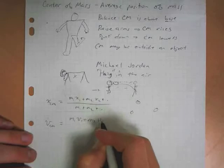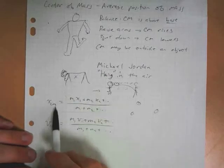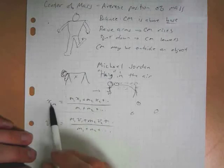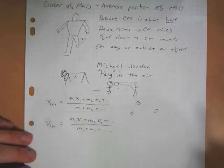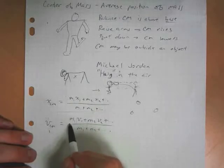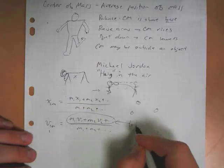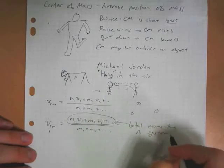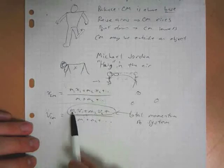Likewise, the velocity of the center of mass of the system is just the average velocity of all the pieces of the system. Because v average is delta x over t, velocity of the center of mass would be delta x center of mass over t. Interesting thing about the velocity of the center of mass formula is that this top part, m1 v1 plus m2 v2, this looks an awful lot like the total momentum of a system. I'm gonna say it is the total momentum of a system.